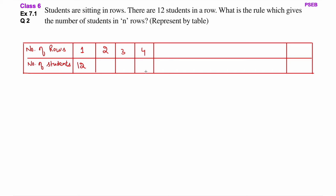Ki agar 4 number of rows hai to kitne students honge? 3 number of rows hai to kitne students honge? 2 number of rows hai to kitne students honge? And so on — is tarah se dash dash laga ke, end mein aap n number of rows ke liye likhenge ki kitne students n number of rows mein baithenge. Isko table ki form mein represent karna hai.